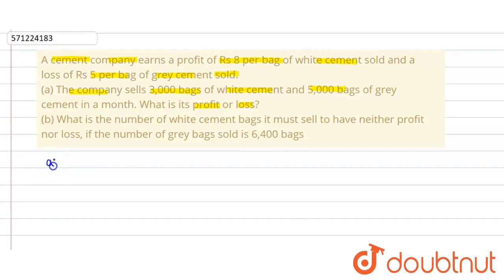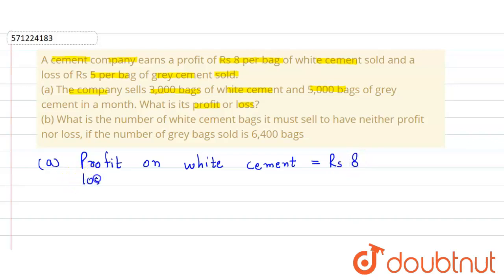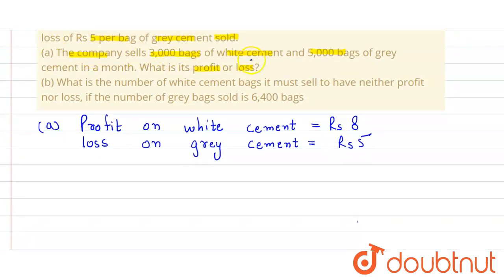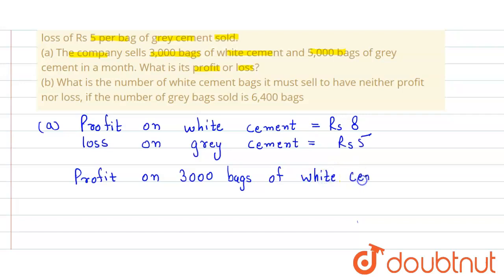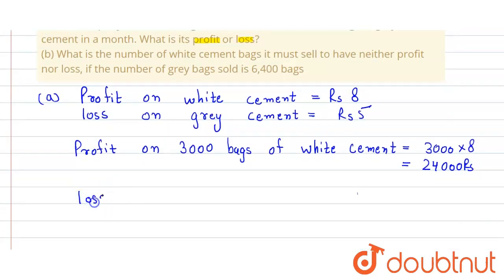In the first part, the profit on white cement is equal to rupees 8, and the loss on grey cement sold is equal to rupees 5. The company sold 3000 bags of white cement, so the profit on 3000 bags of white cement is equal to 3000 × 8, which equals rupees 24000.